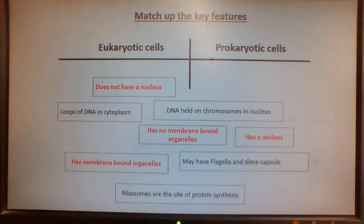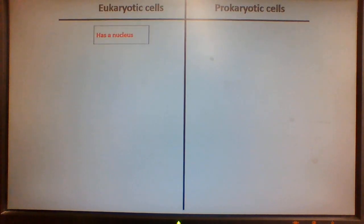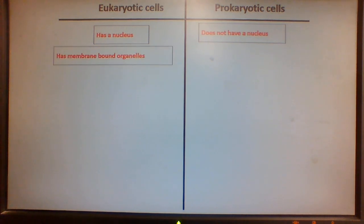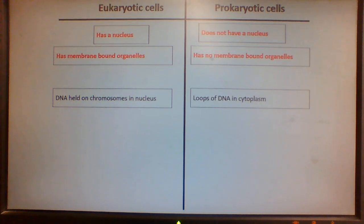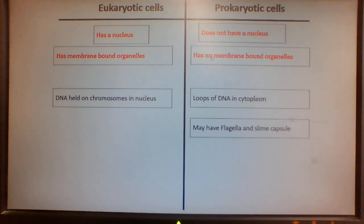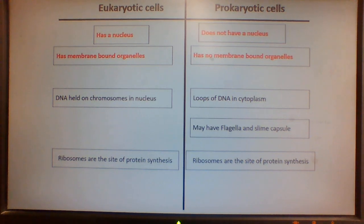Pause the video and here are the answers. Only eukaryotic cells have a nucleus. Only eukaryotic cells have membrane-bound organelles. In eukaryotic cells, there are chromosomes in the nucleus. Prokaryotic cells have no nucleus — just loops of DNA. Prokaryotic cells also have flagella, and they might have a slime capsule for protection. Both have ribosomes for protein synthesis.